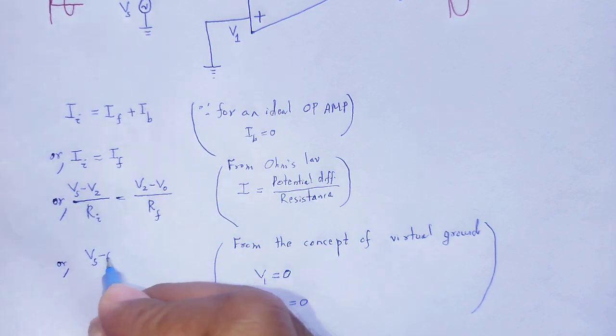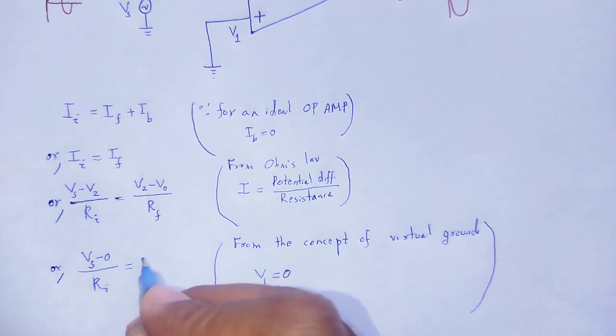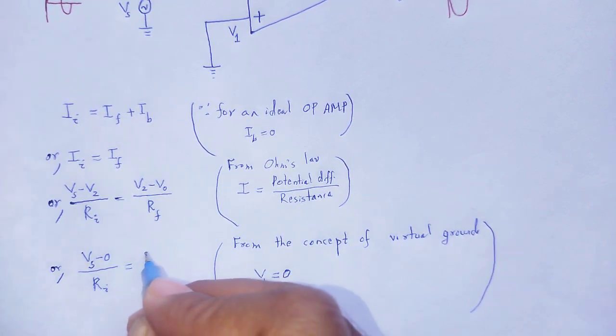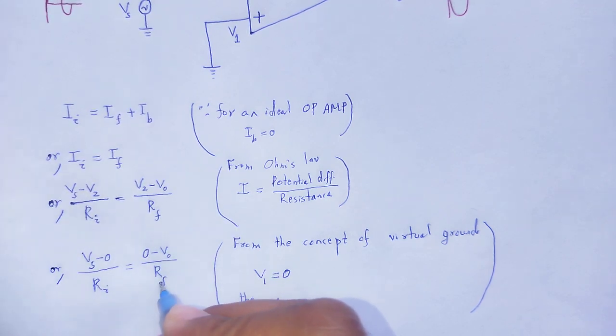So Vs minus zero divided by Ri is equal to V2 as zero, zero minus Vo divided by Rf.